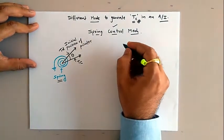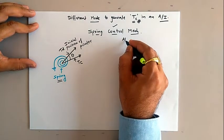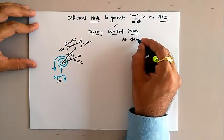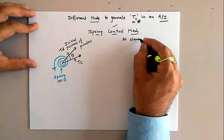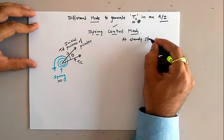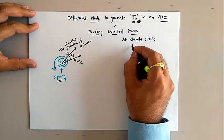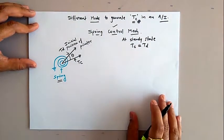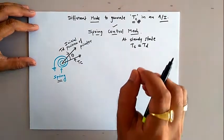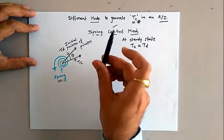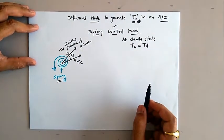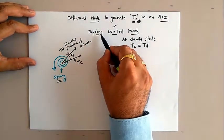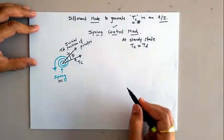At equilibrium or steady state condition, the magnitude of controlling torque equals its corresponding deflection torque, and at that instant the pointer will indicate the final value of the unknown quantity. This is the basic phenomenon behind the spring control mechanism.